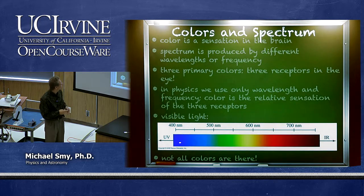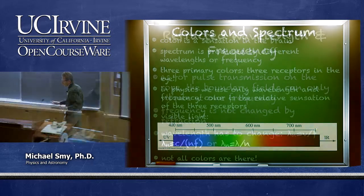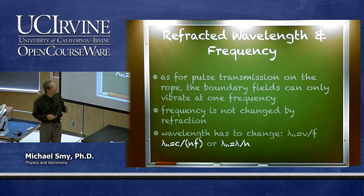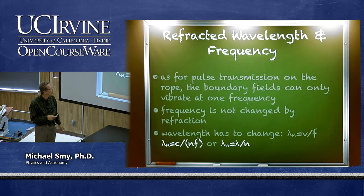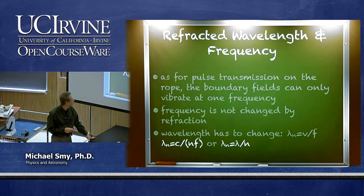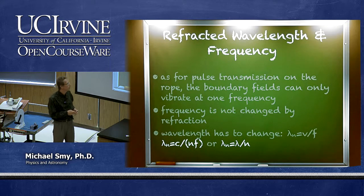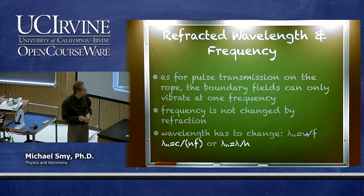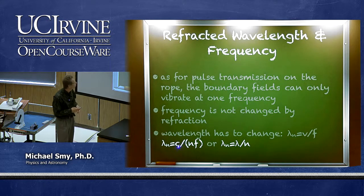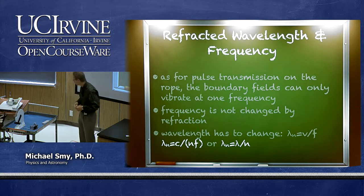The visible spectrum runs from 400 nanometers to a little beyond 700 nanometers. When light enters a medium, the boundary between one medium and another can only have one frequency, so the frequency of a wave is not changed when it crosses a boundary. Since the speed changes from c to c/n, the wavelength must change. The wavelength in a medium with refractive index n is c over nf, meaning it is shorter by a factor of 1/n compared to in vacuum.